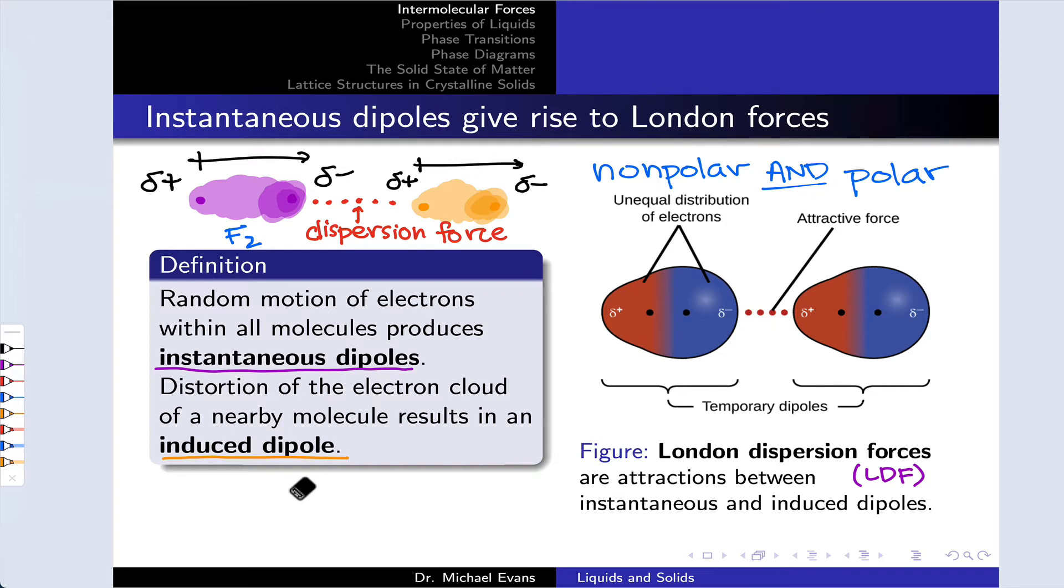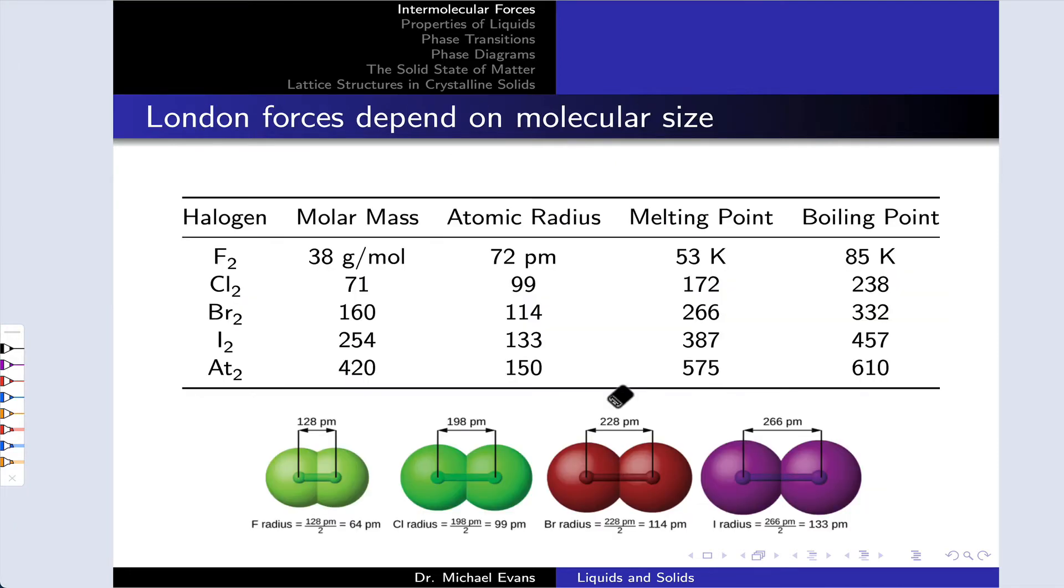Even though London forces tend to be weaker than interactions between permanent dipoles, they can still be relevant in thinking about differences in the boiling or melting points or the strengths of intermolecular forces in two different polar molecules. London forces depend on molecular size, and they tend to get stronger as the molecule gets bigger.